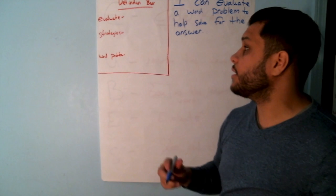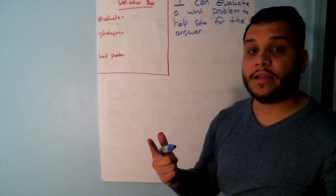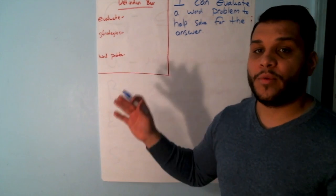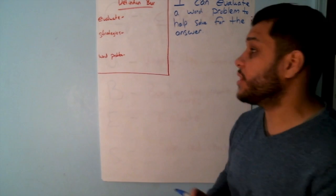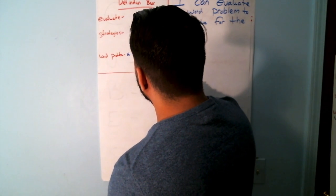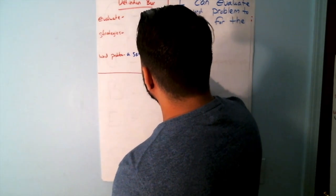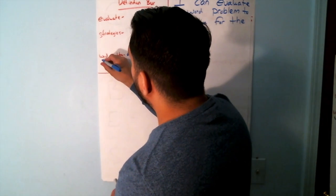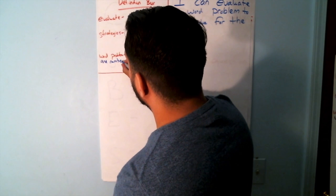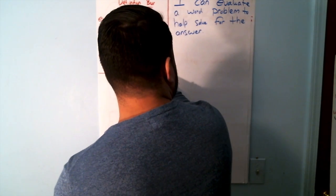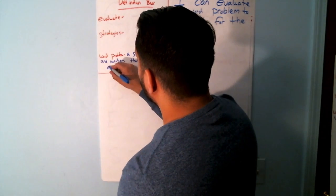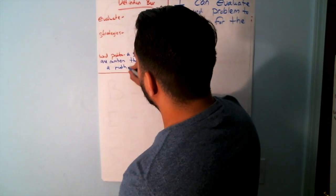In our definition box, we have three different words: evaluate, strategies, and word problems. You guys should be an expert already on what word problems means. A word problem is a set of words and numbers that give us a math sentence.